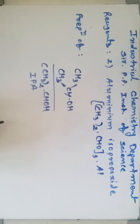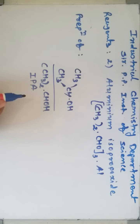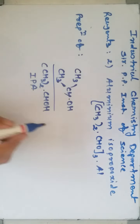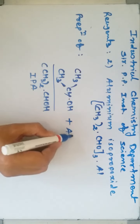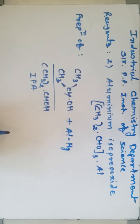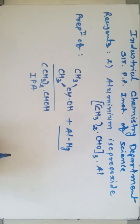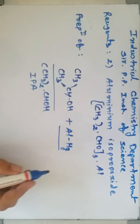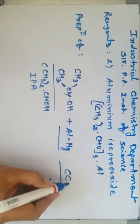For the preparation of aluminum isopropoxide, first we heat anhydrous isopropyl alcohol with amalgamated aluminum (Al-Hg). Amalgamated aluminum is written as Al-Hg, where a solution of a metal with mercury is known as an amalgamated solution. We also add a trace amount of CCl4, carbon tetrachloride, as catalyst.